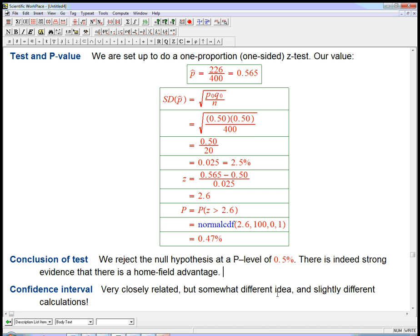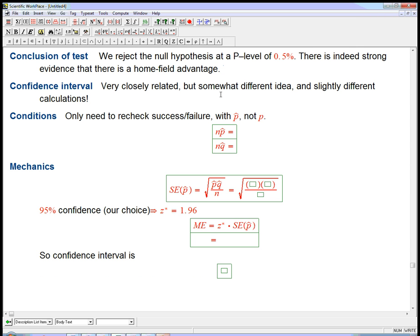Now let's look at a confidence interval. Now that we know there probably is a home field advantage, let's see what the strength of that signal is by trying to predict the reasonable values for the percentage of games won by the home team. It's a very closely related thing, but it's a little bit of a different idea because now we're not assuming the null hypothesis, which is good because we're pretty sure it's false.